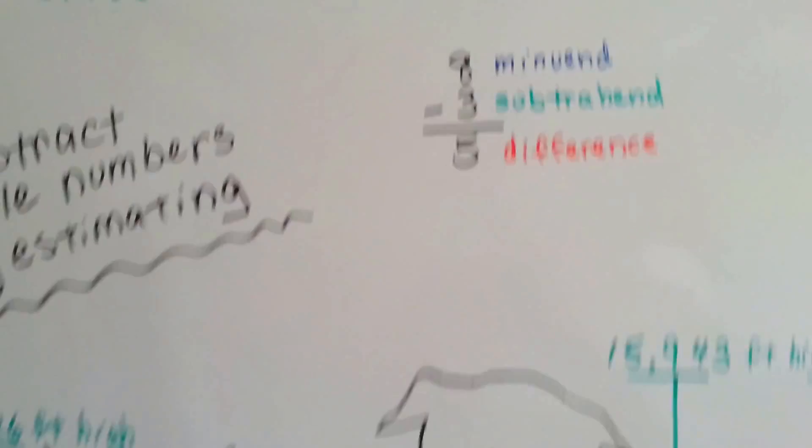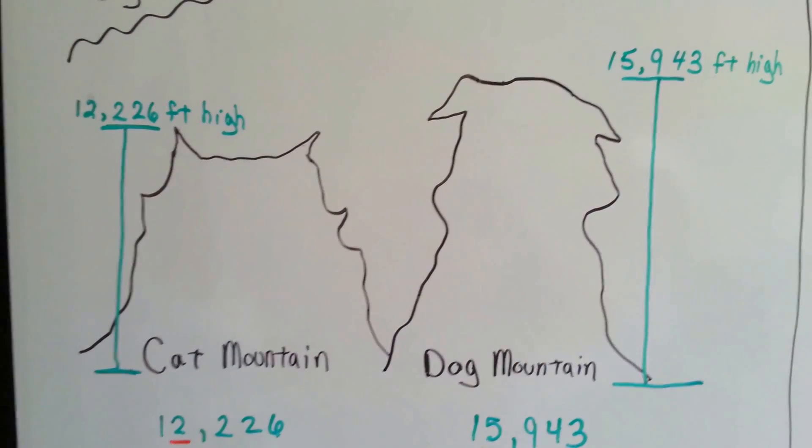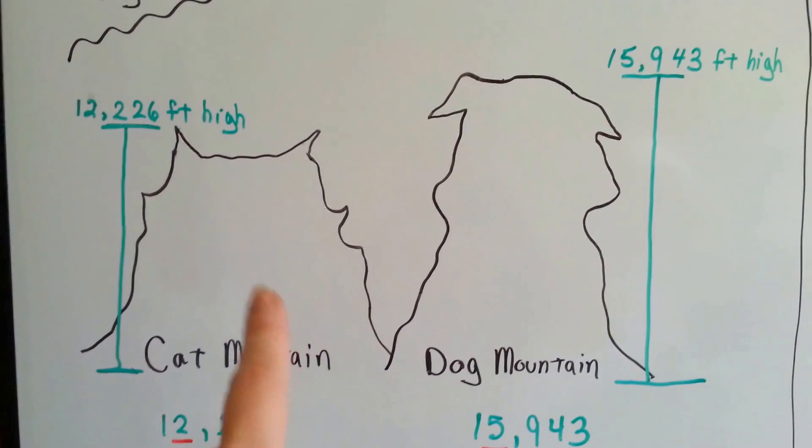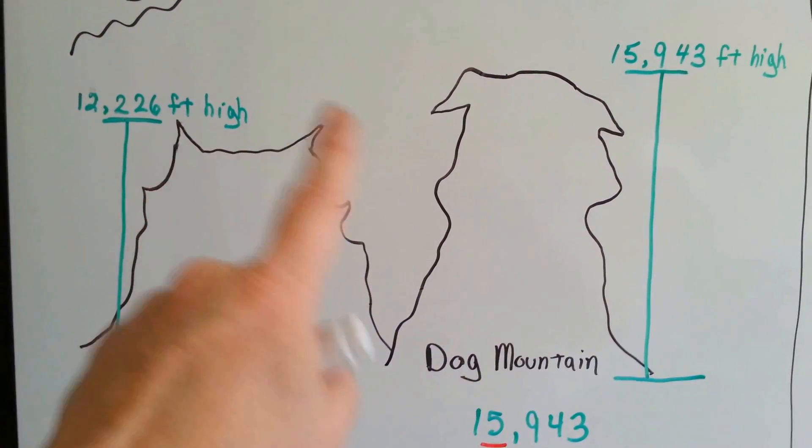Okay, I want you to remember that. We have two mountains. Look at this. That's Cat Mountain, and that's Dog Mountain. Can you see why they're named? That one looks like a cat, and that one kind of looks like a dog, doesn't it? The silhouette, see it?